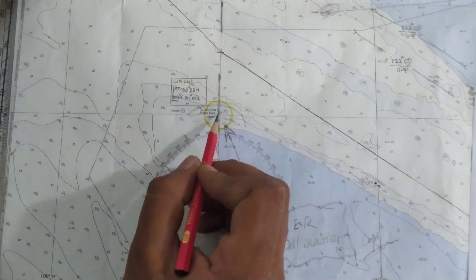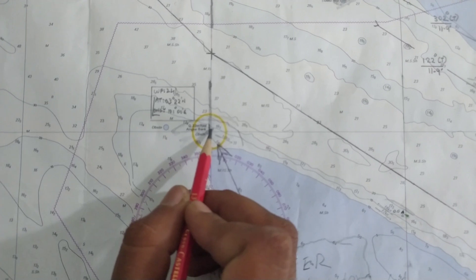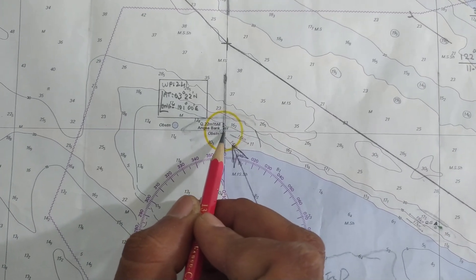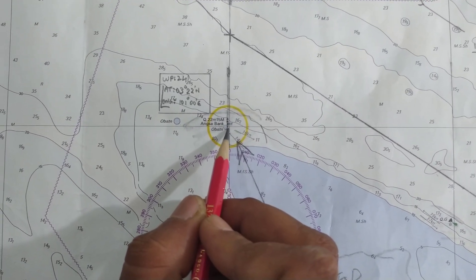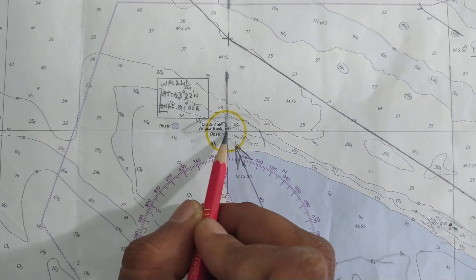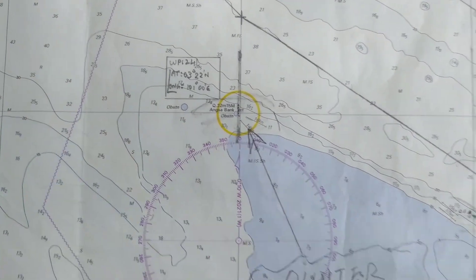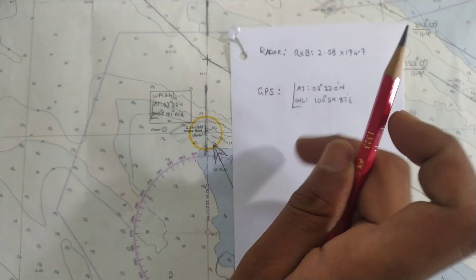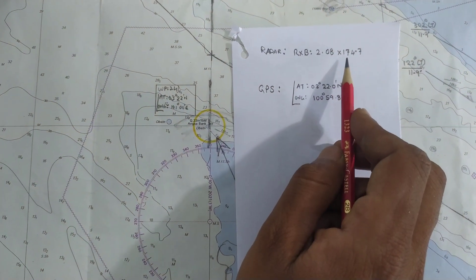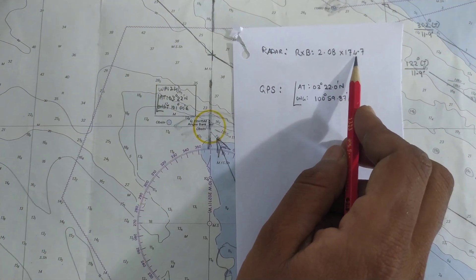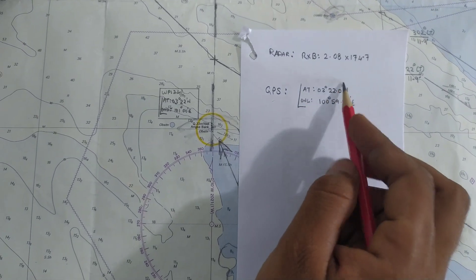This is the Angsa Bank on the chart — it is a North Cardinal mark and it is a fixed mark. You can see the star symbol here. As per our radar, the range and bearing was 2.08 nautical miles and 174.7 degrees. The GPS position was also recorded, so let us check how the position is going to come up.